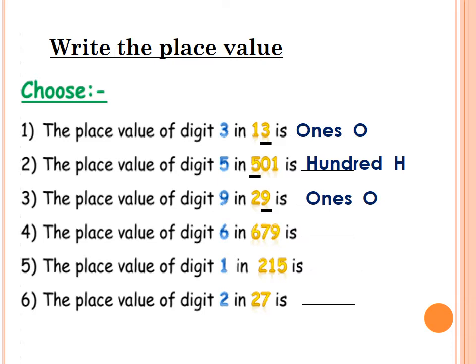The place value of digit 6 in 679: underline 6. It's in the hundreds. Excellent. The place value of digit 1 in 215: underline 1. 1 is in the tens. Excellent. The place value of digit 2 in 27: underline 2. 2 is ones or tens or hundreds? Tens. Excellent, Primary 2.